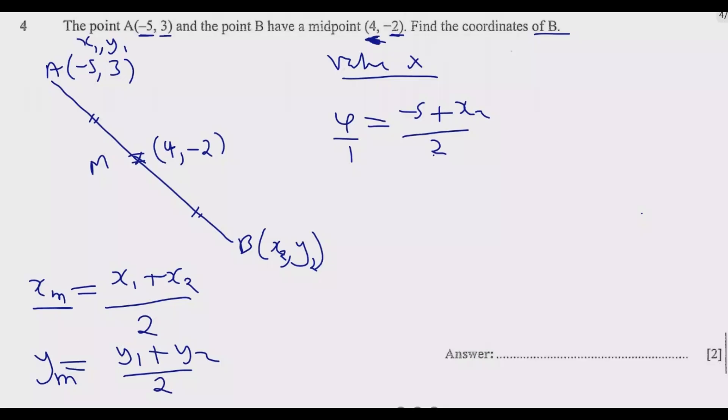Then we'll just solve a simple equation. Cross multiply, 2 times 4 will be 8. So 8 equals negative 5 plus X₂. This tells me that 8, and this one crosses the equal sign becomes positive. So 8 plus 5 is equal to X₂, so I'm getting 13 equals X₂.